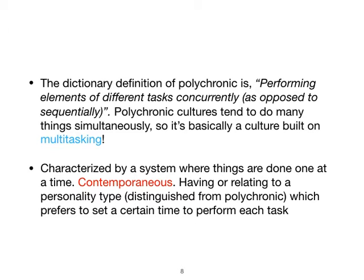They'll be talking, working, laughing — that's how it goes. By contrast, monochronic culture is characterized by doing things one at a time, relating to a personality type which prefers to set a certain time to perform each task. In monochronic cultures, the most common thing you see is that they focus on one thing at a time. They do not want things to be scattered out. They like to be specific and concentrate on tasks without disturbing others.